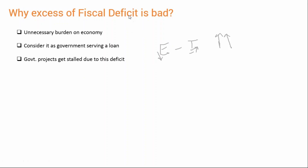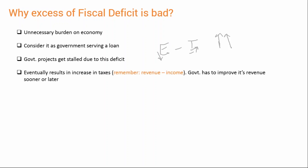So important projects of the government will be stalled. Additionally, the government will need to increase its income, which is largely taxes. So essentially, when the government is running a high fiscal deficit, at some point it will be raising taxes, which will have a direct impact on citizens. That's why fiscal deficit is bad — in the long run it results in higher taxes.